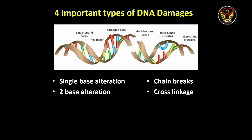First is single strand break, where one strand of the DNA backbone is cut or cleaved. Next we can see mismatch, where wrong bases get paired or damaged, or a homologous base pair gets mismatched. Similar to single strand break, both strands of the DNA can also break, causing a double strand break damage.